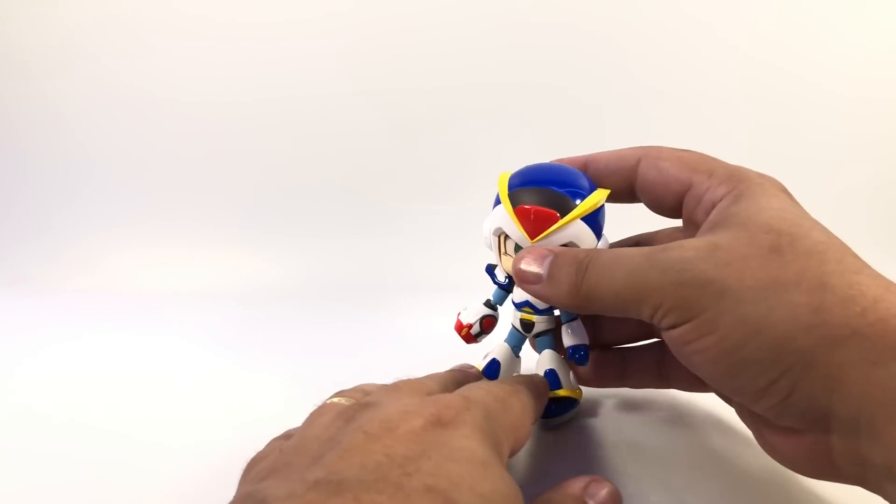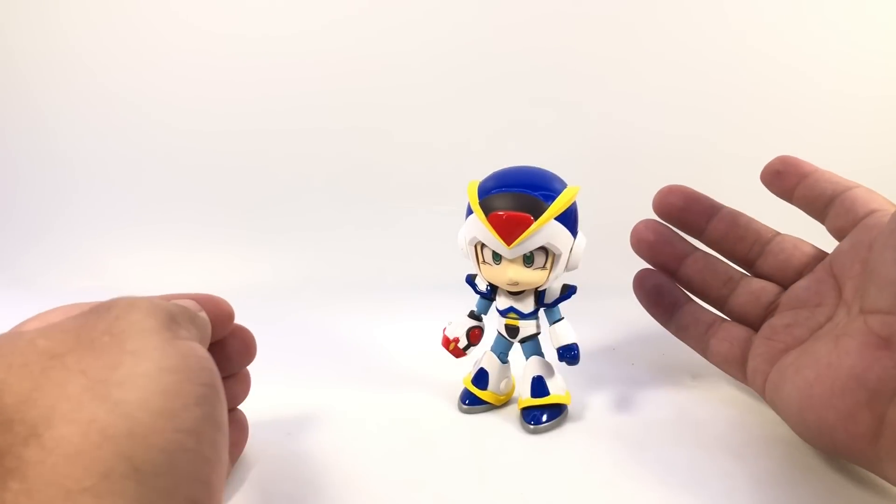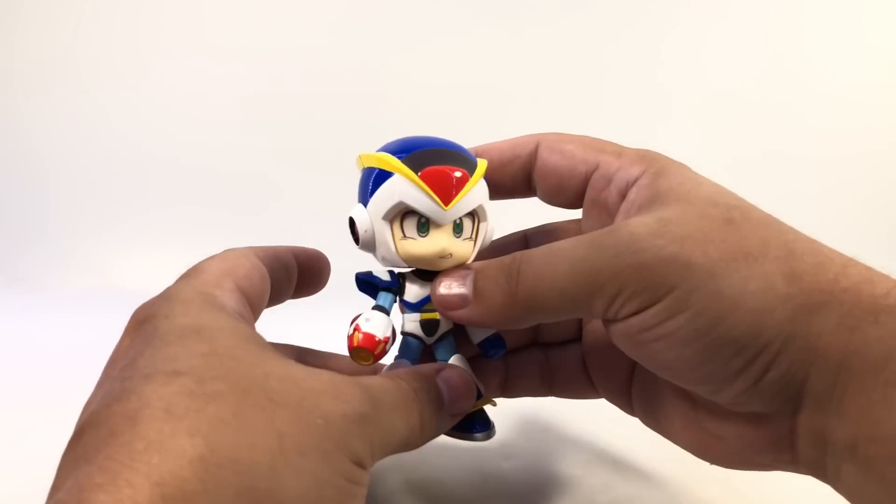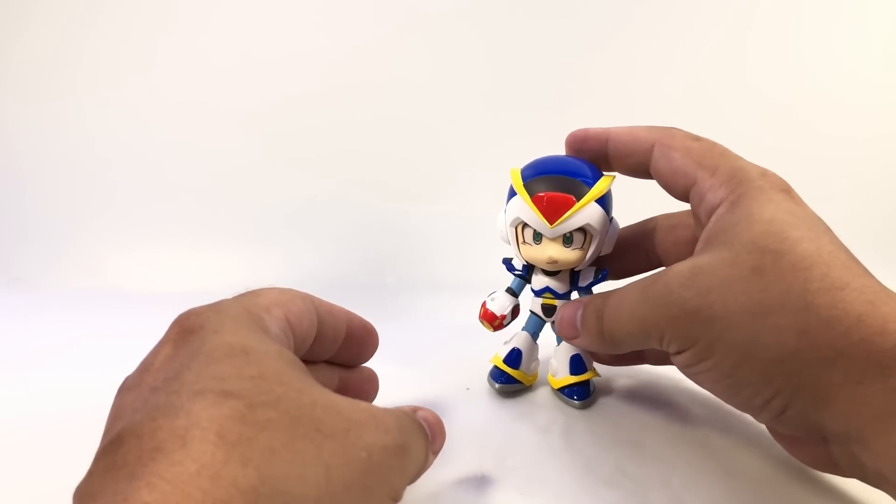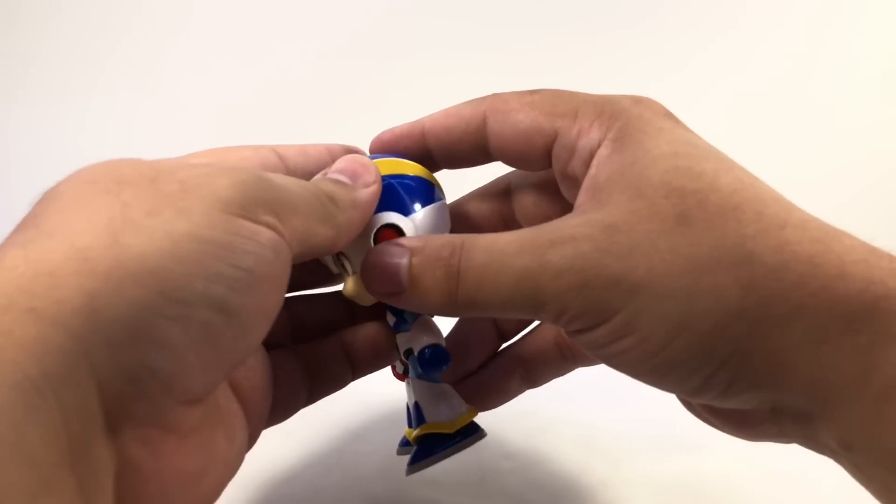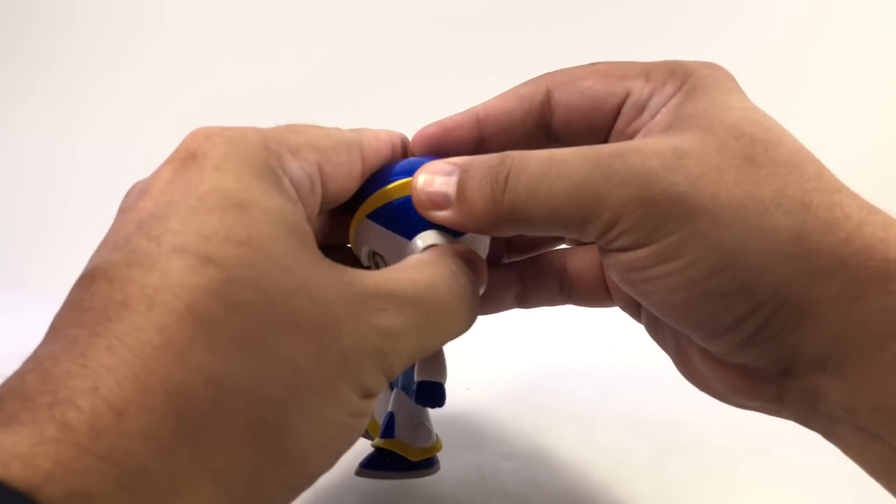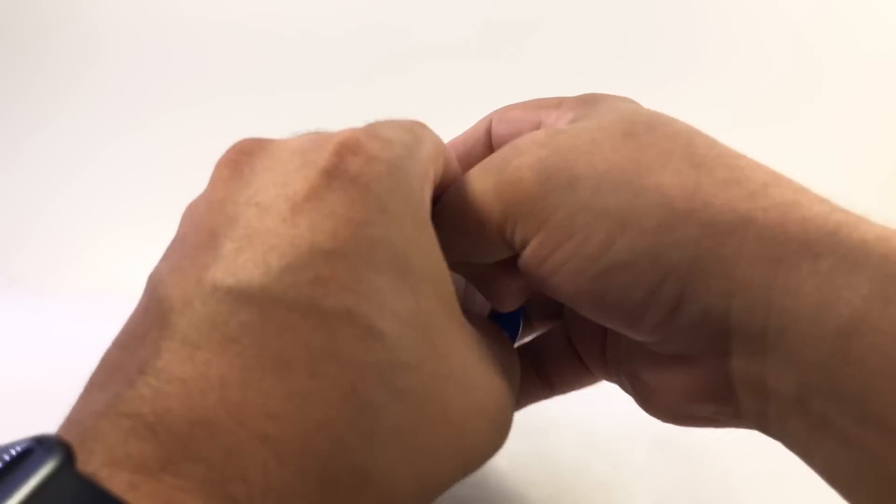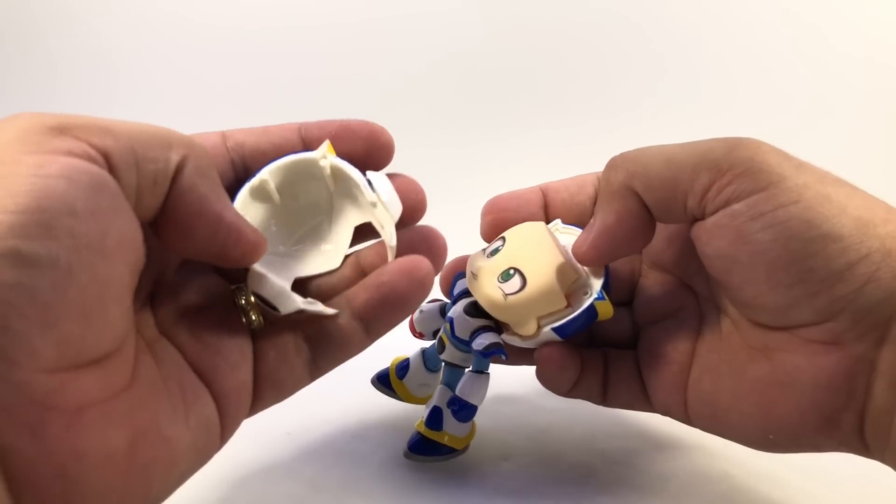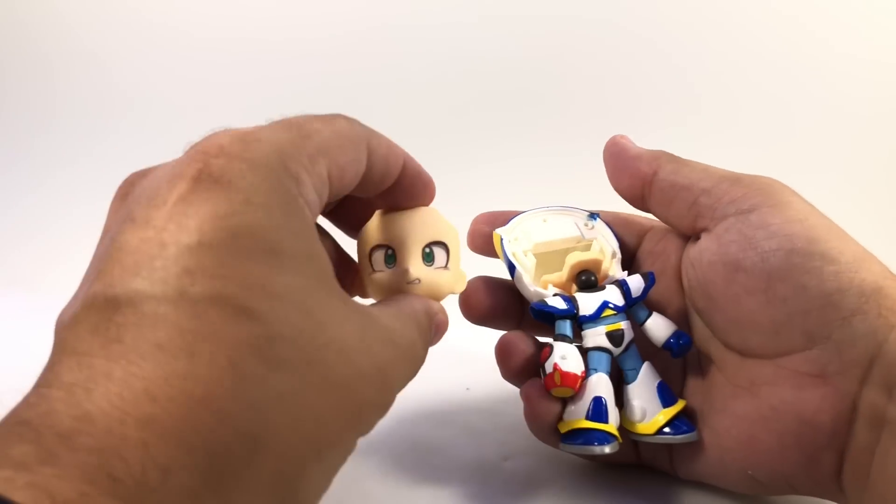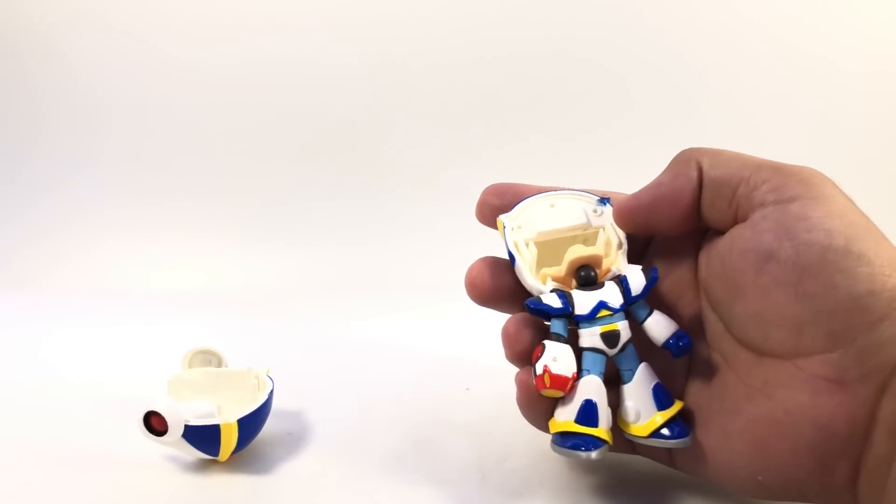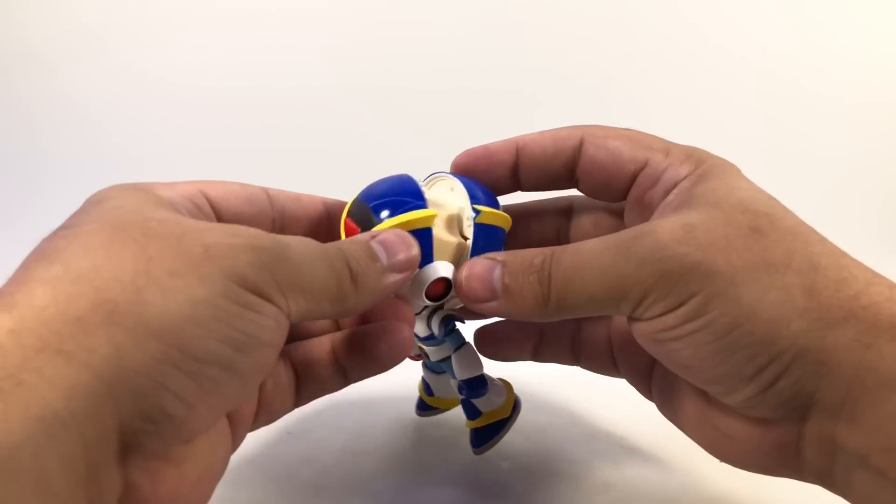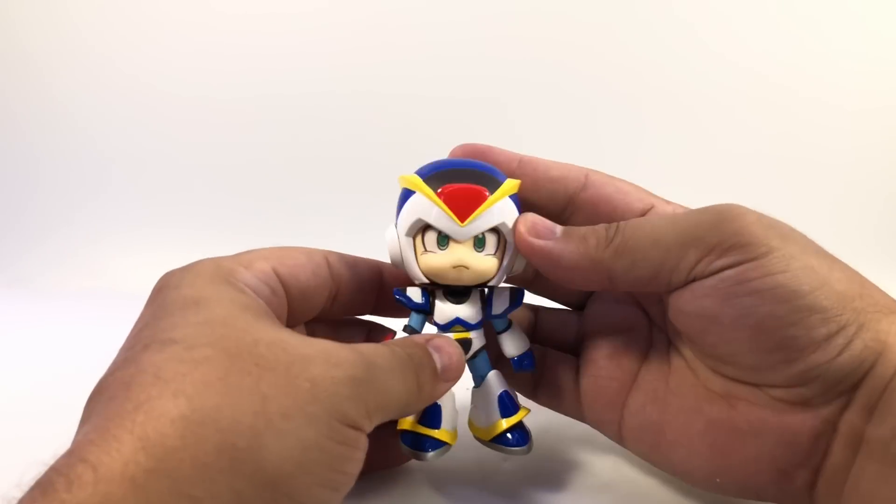They're limited in articulation. They're just supposed to be little cutesy versions of the characters. You can see there he is with his buster gun. He's got his determined face on right now. You can pop his helmet off here, split that in half, and you can pull this face off and replace it with more of a neutral face if you prefer. Slide that in, plug the front of the helmet back on. It's that easy and now he's swapped.